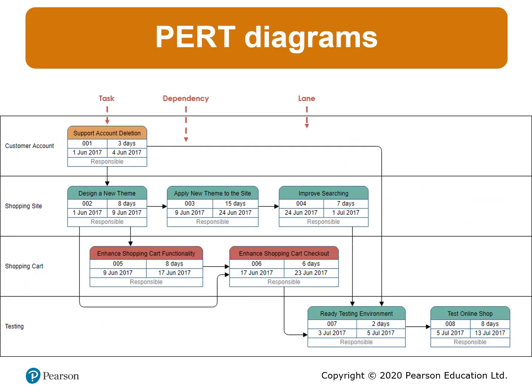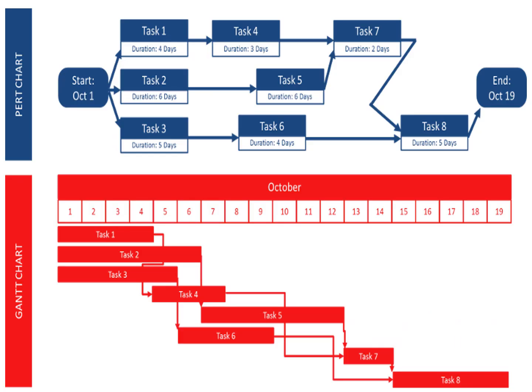PERT diagrams explain tasks, dependencies, and swim lanes. For example, we have a customer account lane, a shipping side, a shipping chart card, and testing — all parallel activities done at the same time. Each activity shows duration, start and finish dates, and can include the responsible person. Another example shows more parallel transactions throughout the project, whereas the Gantt chart mainly shows the same task's timing, duration, and responsibility.